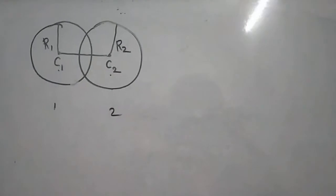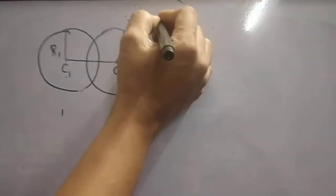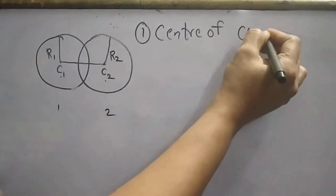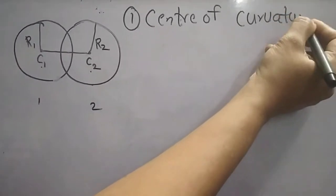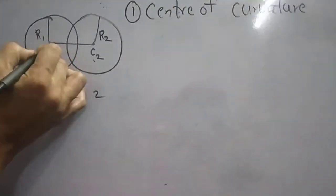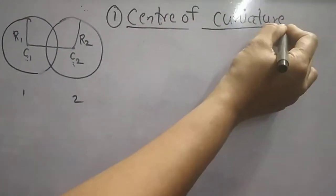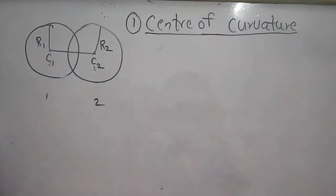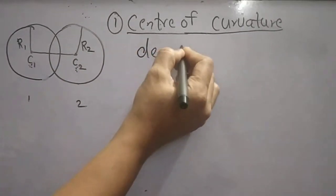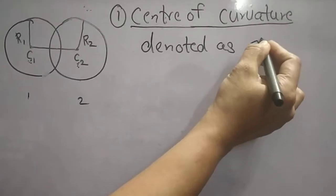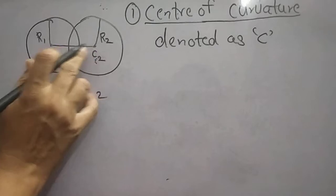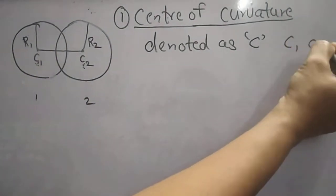First, let us see the definition of center of curvature. C1 and C2 are the centers of curvature, denoted as capital C. The convex lens has two centers of curvature, that is C1 and C2.